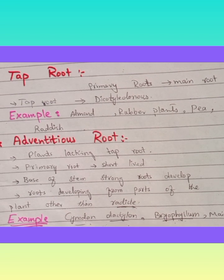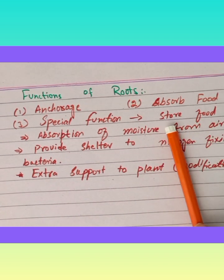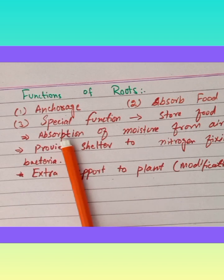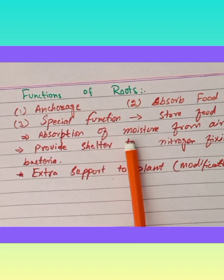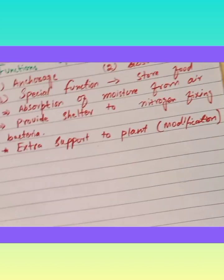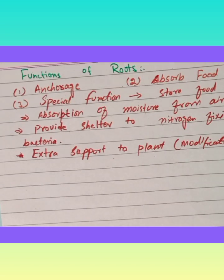There are two main functions of a root: anchorage, which means to fix the plant in the soil, and absorption — the root helps the plant absorb nutrients, minerals, and water. There are also special functions: roots store food, as seen in radish, carrot, and turnip. Some roots absorb moisture from the air. Some roots undergo modification to act as respiratory organs. Some roots provide shelter to nitrogen-fixing bacteria, and some roots provide extra support to the plant through modification.